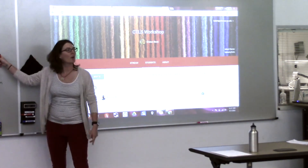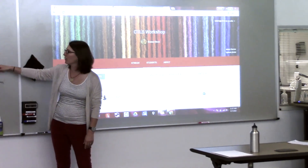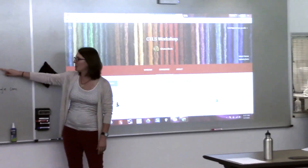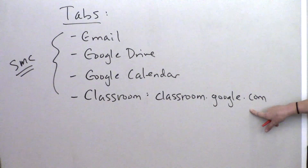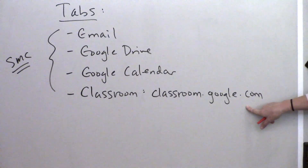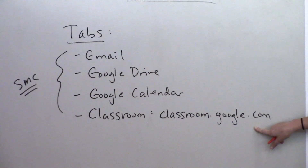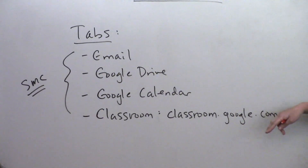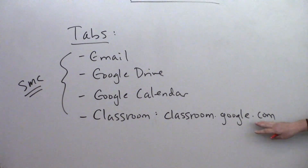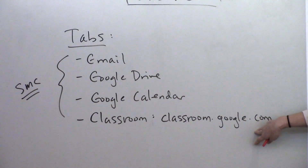These are the tabs that you want to have open on your laptop or iPad or whatever: Gmail, Google Drive, Google Calendar, and Google Classroom. Almost everybody has a laptop. If you have a tablet or iPad, there are apps for each of these you can download very quickly. The URL for Google Classroom is just classroom.google.com.